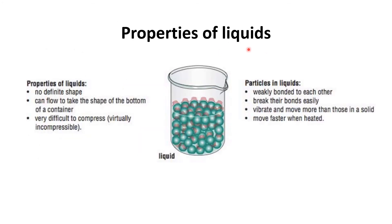The second state of matter is liquids. Liquids do not have a definite shape; they flow and take the shape of the bottom of the container. For example, the same liquid placed in a glass or a bottle will take the shape of whichever container it is in. Liquids are also very difficult to compress — virtually incompressible — because although there is a little space between particles, it is not enough to compress them significantly.